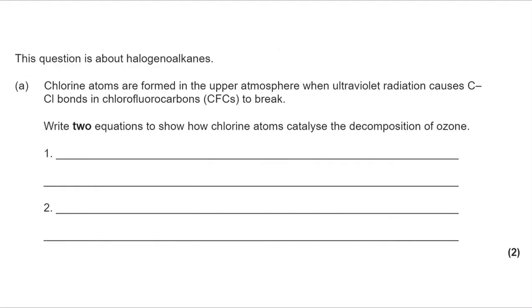Taking a look at part A, the question is about halogenoalkanes, often known as haloalkanes also. Chlorine atoms are formed in the upper atmosphere when ultraviolet radiation causes C-Cl bonds in CFCs to break. Write two equations to show how chlorine atoms catalyse the decomposition of ozone.